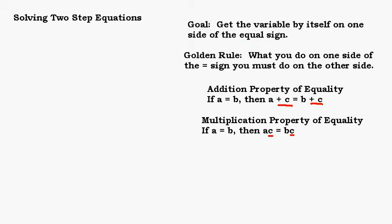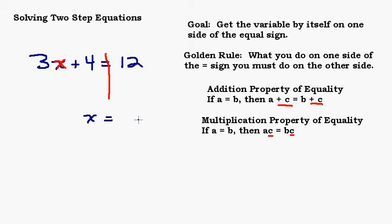Let's look at an equation that's going to take two steps to solve: 3X plus 4 equals 12. My goal is to get the variable by itself on one side of the equal sign. The variable X is on the left-hand side, and my goal is to make it so there's only an X there — so eventually it'll look like X equals something. This 3 and this 4 need to be gone. That's why it's called a two-step equation: I've got two numbers I need to get rid of to get X by itself.